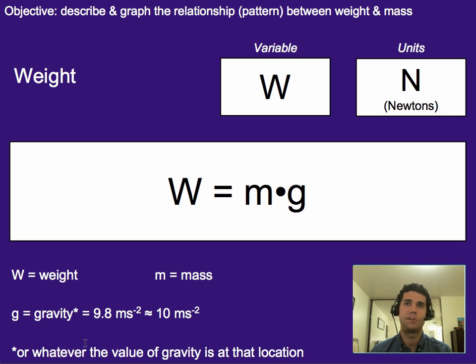So weights. We talked about last time its variable is W. The units are N, or newtons in this case. In everyday life here in America, we use pounds, but in the metric system, we'll use newtons.